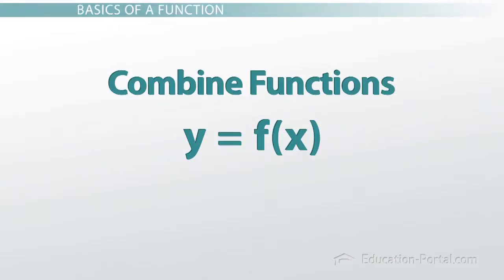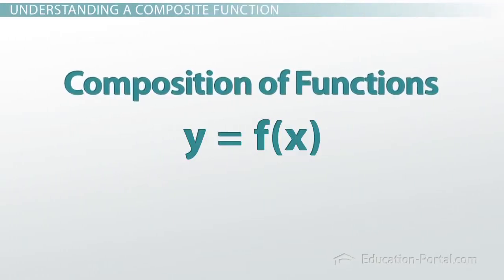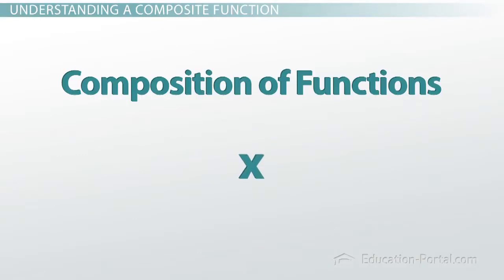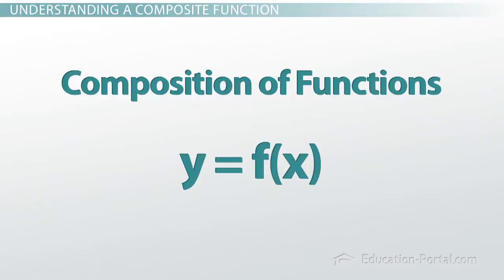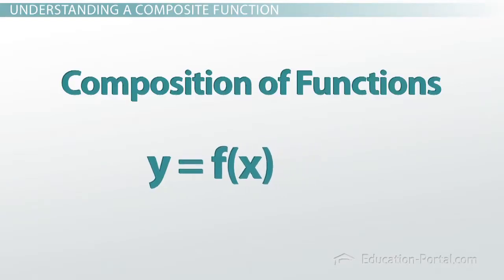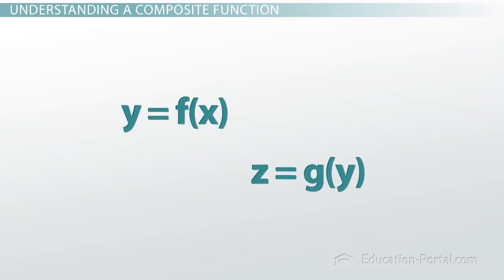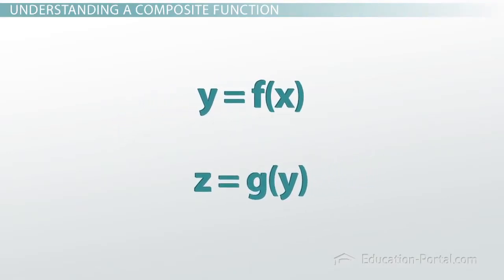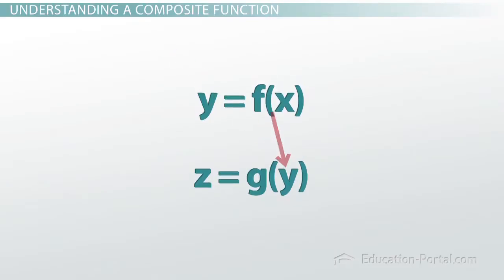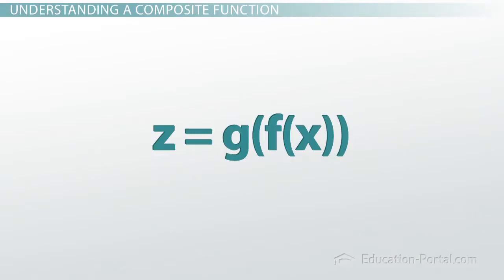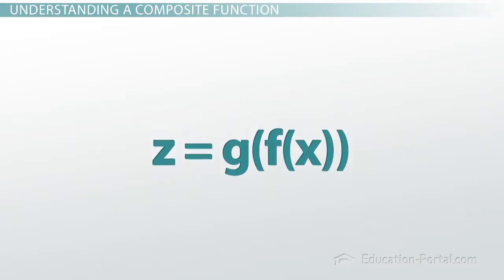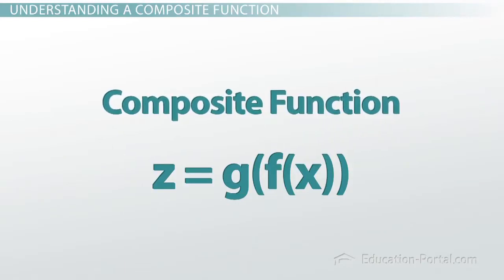In math, this is known as composition of functions. You start with x, use it as input to a function y equals f of x, then put that output as input into a second function g. So if y equals f of x and we plug that into z equals g of y, we get z equals g of f of x — a composite function.